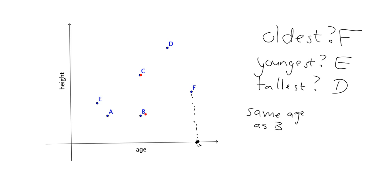Well, it's this person here, C. They're exactly the same distance to the right as B, and so they're the same age as B.